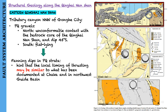Fanning dips in PQ strata along the eastern Qinghai-Nanshan front provide a hint that the local timing of thrusting may be similar to what has been documented at Chaka. The paper favors this explanation, but acknowledges that timing is somewhat equivocal. Another possible explanation is that fanning dips at this locality may also reflect a fold hinge.